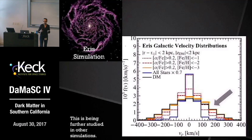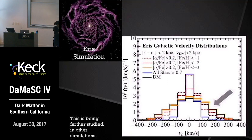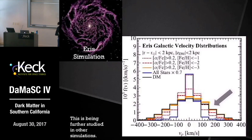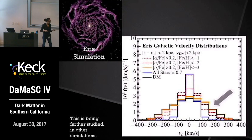We use the Eris simulation to verify this. We have a histogram of the radial velocity, and with the [Fe/H] cuts we discussed, the bottom line is that the stronger the metallicity cut, the closer these histograms get to the dark matter one, shown in black. Of course, this has been seen in only one simulation, and you need to verify it in multiple simulations to make sure it is accurate.